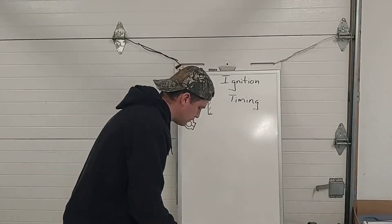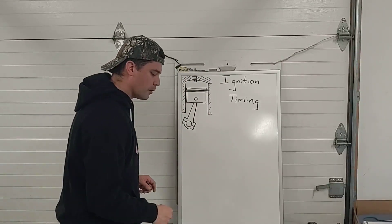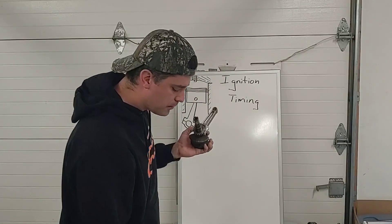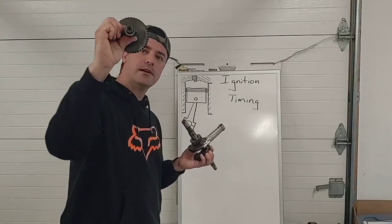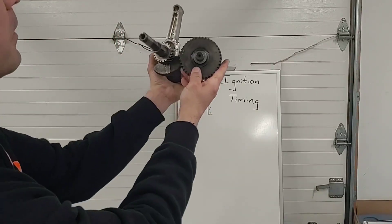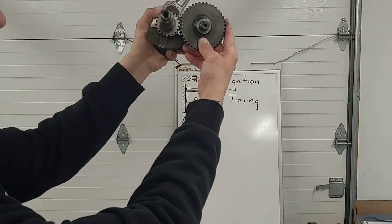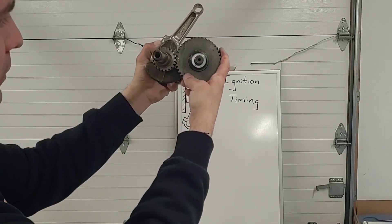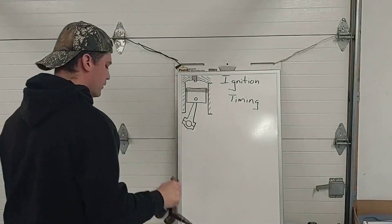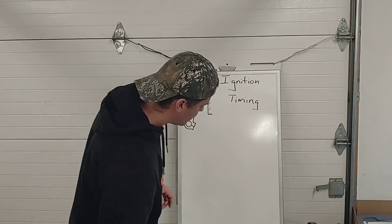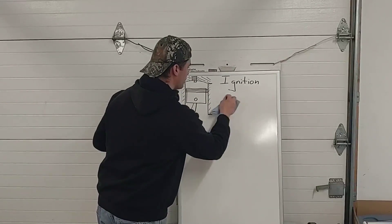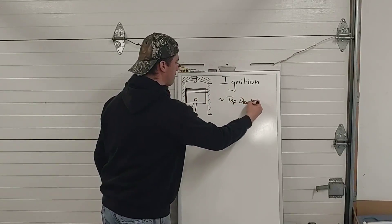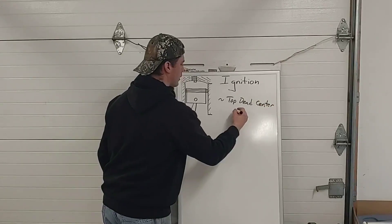One other thing to note: when we're talking about ignition timing, that's not to be confused with camshaft timing or mechanical timing in an engine. Here's my small engine camshaft — you can see there are a couple of timing marks here that have to be aligned when the engine is assembled. That's your camshaft timing. We're referring to ignition timing, which we know is supposed to occur somewhere around top dead center on a compression stroke.